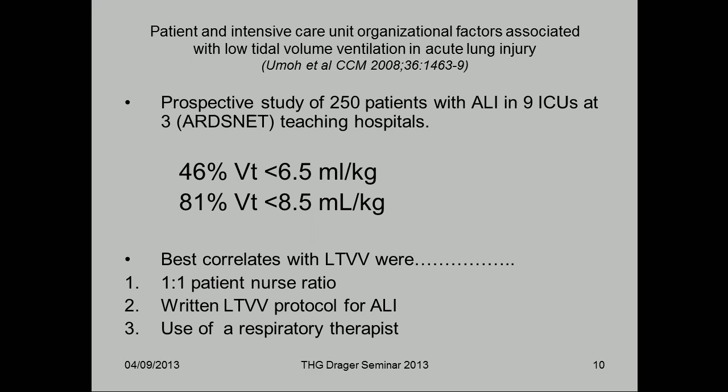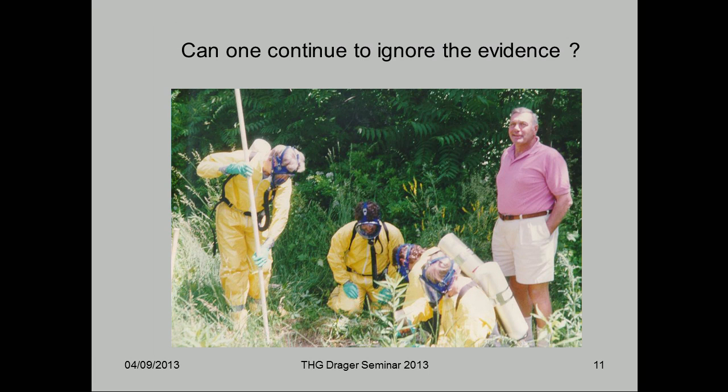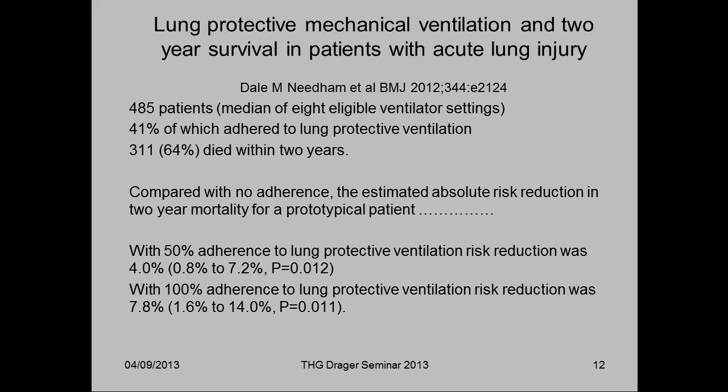What's the problem with looking at this and implementing it? Throughout the last 10 years, there's still a problem in uptake of this strategy. A paper published in 2008 from American ICUs that were actually involved in the ARDSnet study some eight or nine years before showed that on a regular basis they were still not achieving the target volumes discussed in the ARDSnet paper. A BMJ paper from 2012 looking back over 485 patients found that only 40% were achieving lung-protective strategy, but with a very strong message: if you can adhere to lung-protective ventilation, you significantly reduce mortality risk.